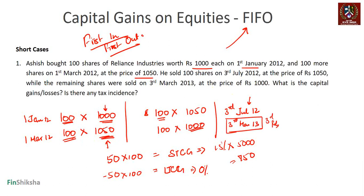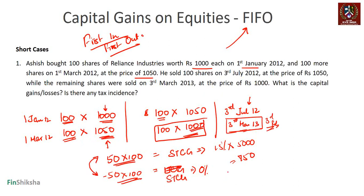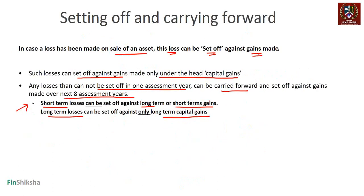Using the Reliance example: if instead of selling the second lot on 3rd March 2013, we had sold it on 3rd February, it would have been short-term. In that case, the short-term loss of ₹5000 and the short-term gain of ₹5000 could be set off against each other, resulting in zero net tax liability. In practice, you could sell a loss-making position and buy it back after a few days to crystallize a short-term capital loss and set it off against gains.